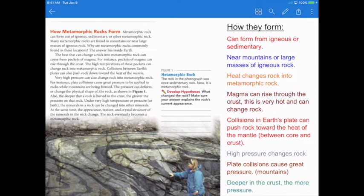Heat can also change rock into metamorphic rock. That's like magma. So magma can rise through the crust and it's extremely hot. It can change any type of rock—igneous rock or sedimentary rock—through that heat. It changes the crystals and the minerals and it forms metamorphic rock. Collisions in the earth's plates, like I said before, can cause great heat and pressure.